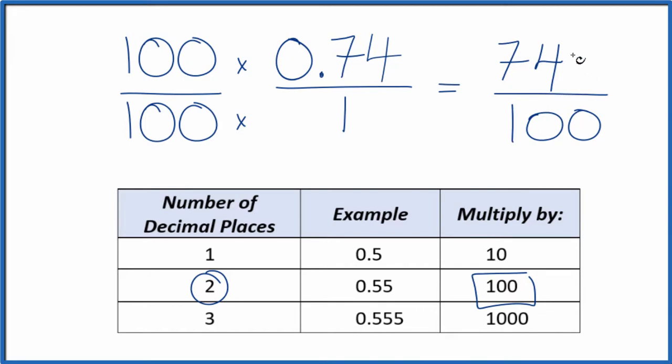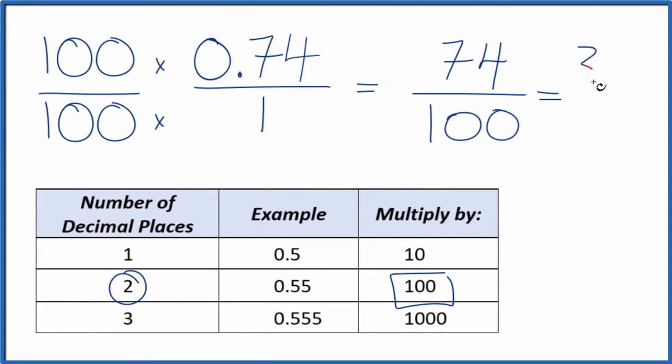But we can reduce this further, since both of these are even. We can divide 74 by 2. That would give us 37. And 100, we can divide that by 2. That'll give us 50. And we can't simplify this fraction any further.